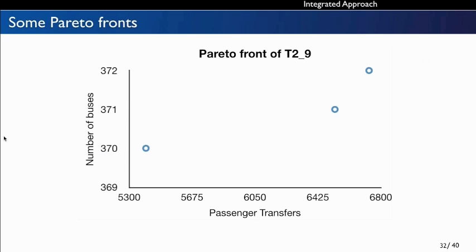Here I show some of the Pareto fronts. For instance number 9 of Type 2, the minimum fleet size is 370 buses. But by allowing one more vehicle, it is possible to increase the number of passengers benefiting from well-timed transfers by more than 1,000. So it is really worthwhile to use one more vehicle in this case, because there is a very large gain in terms of passenger transfers.